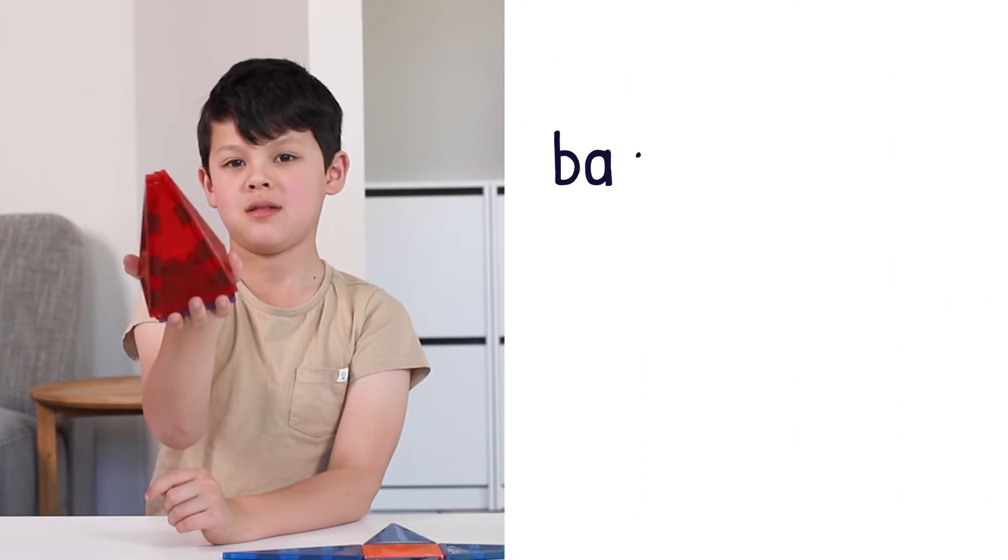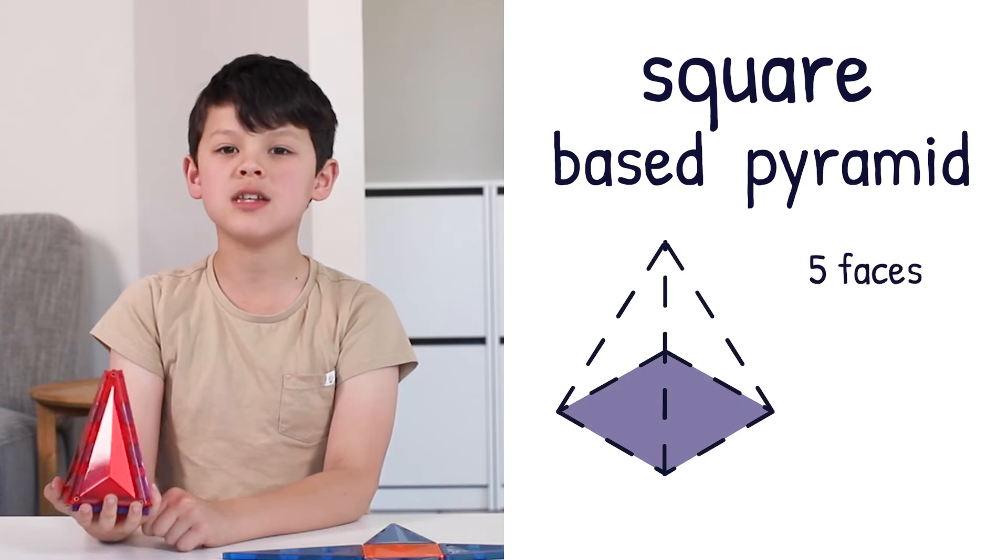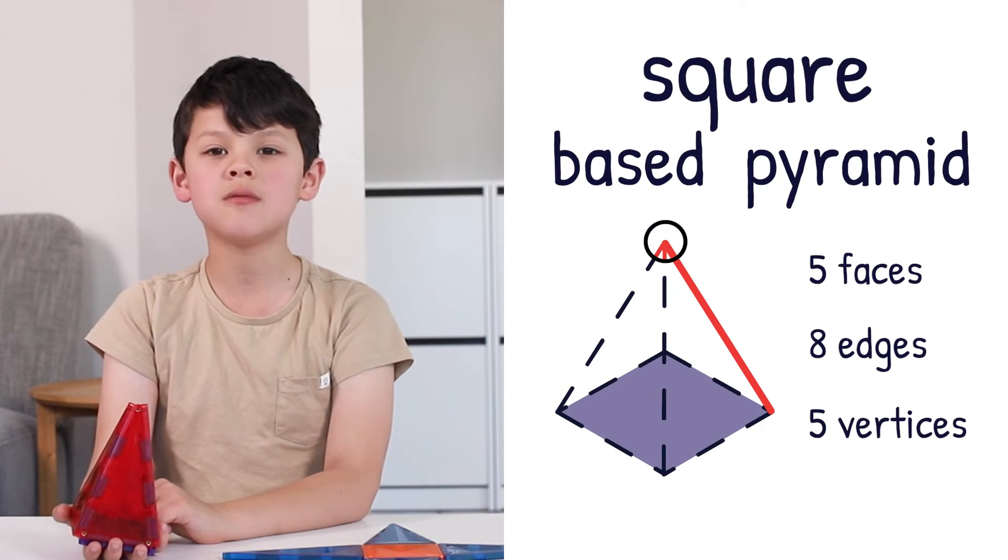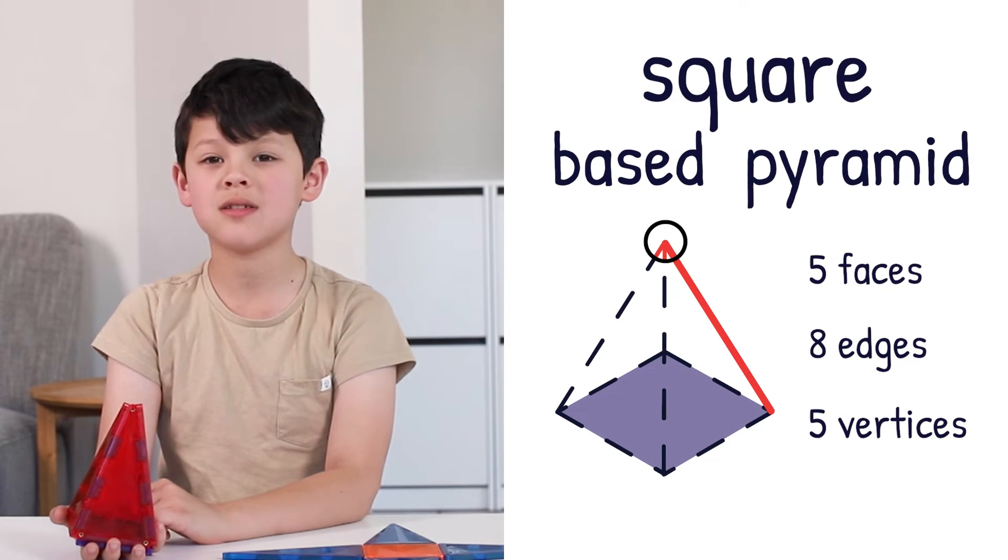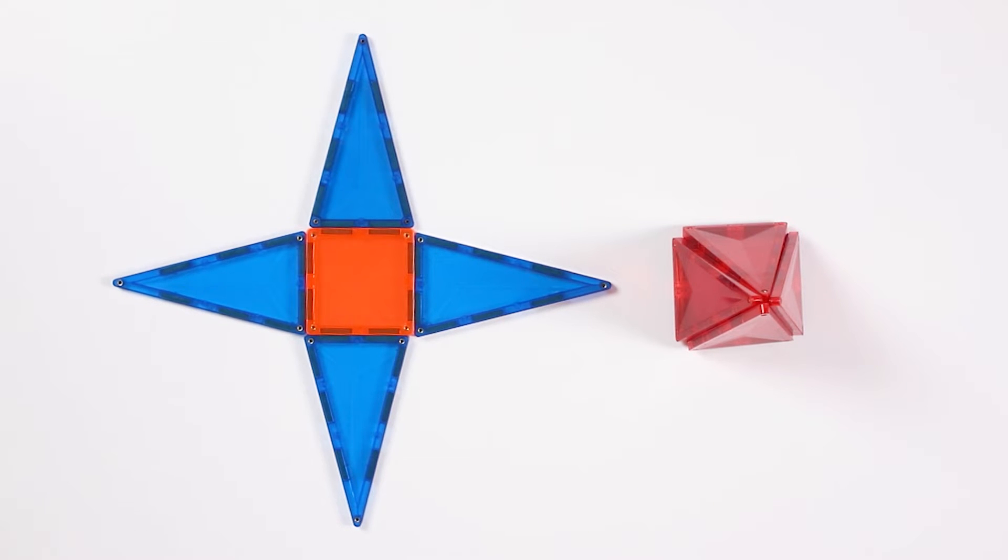This is the square base pyramid. It has 5 faces, 8 edges, and 5 vertices. This is the net for the square base pyramid. It has 5 faces. Let's fold it up.